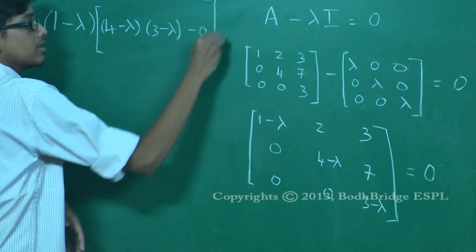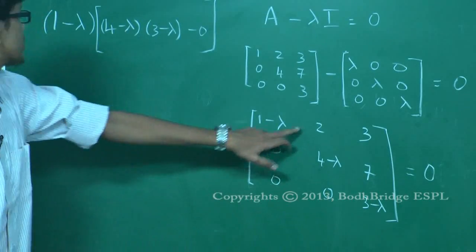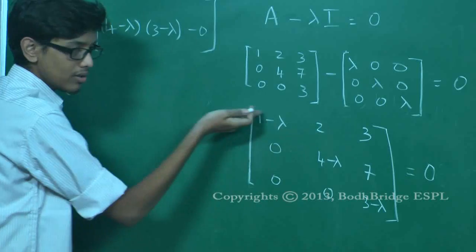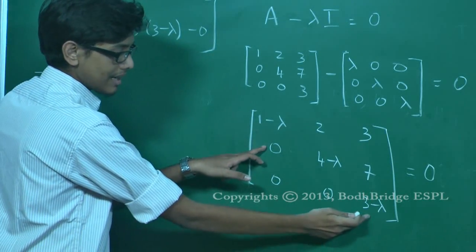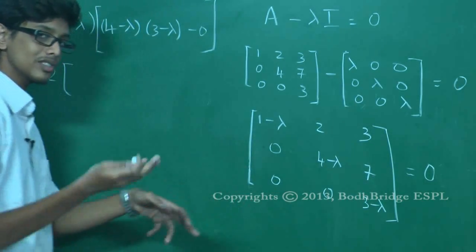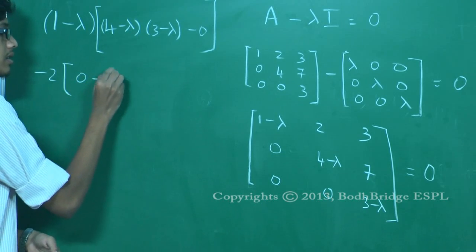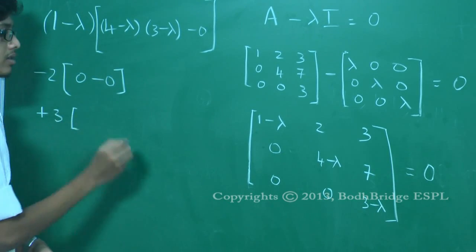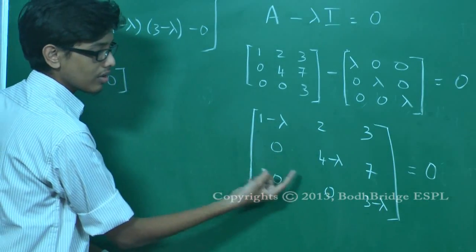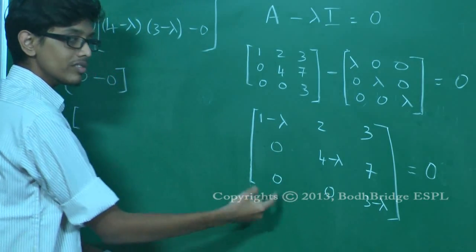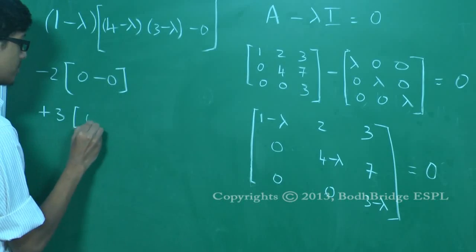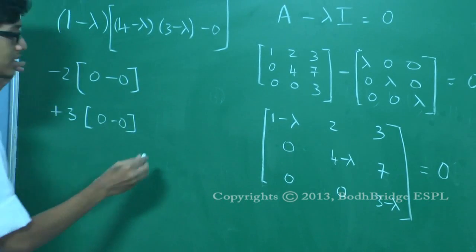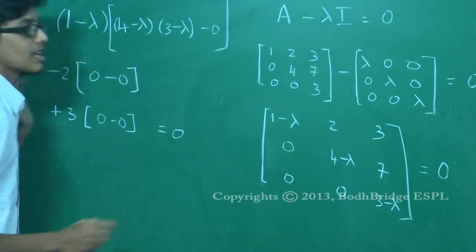Continuing the cofactor expansion: minus two times the minor, which gives zero times (three minus lambda) minus seven times zero, equaling zero. Plus three times the minor, which gives zero times zero minus (four minus lambda) times zero, also equaling zero. So those terms vanish, and this entire expression is the characteristic equation set equal to zero.